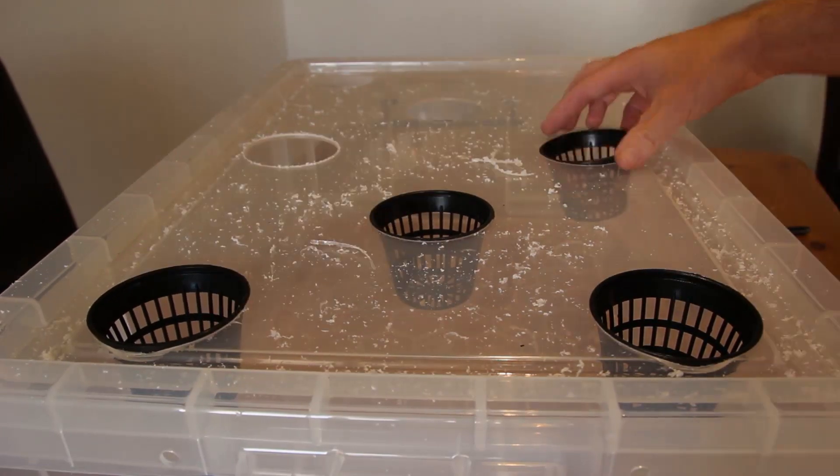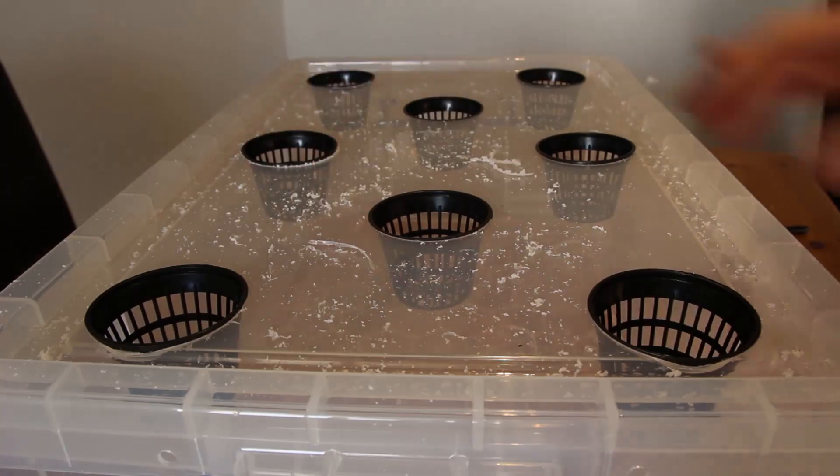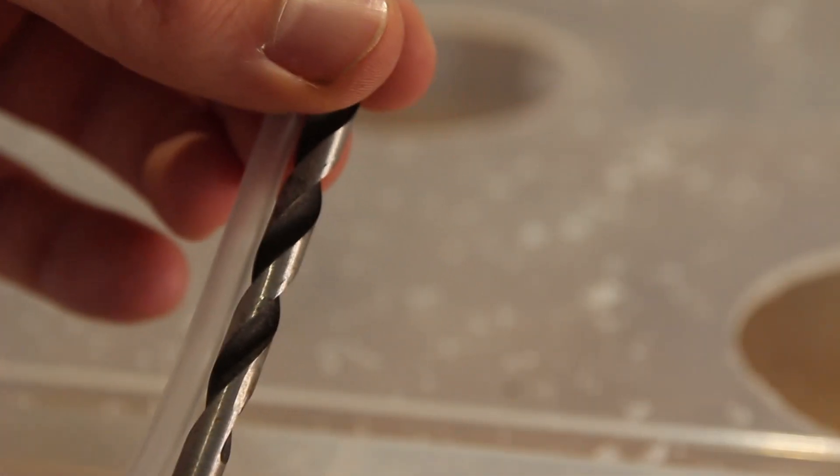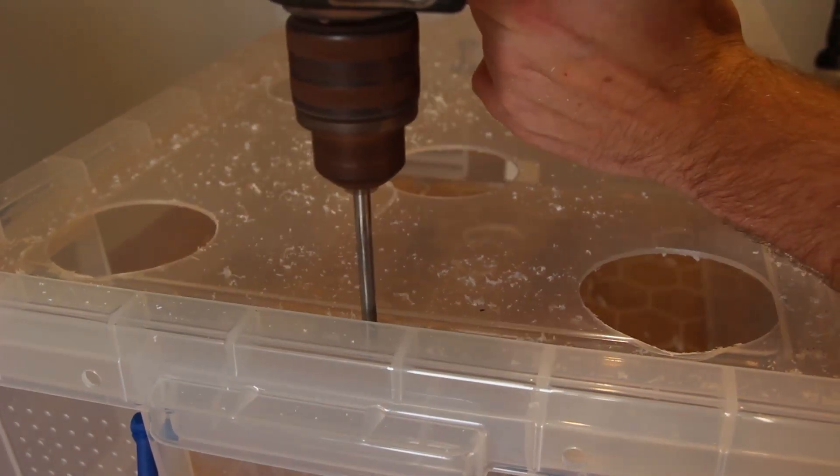As you can see all eight of these net pots fit in perfectly. Next we need to drill some holes for the air hose lines. To do this I'm just choosing a drill bit that's of a similar size and just drilling straight through the plastic. I'm test fitting the airlines and they fit perfectly.